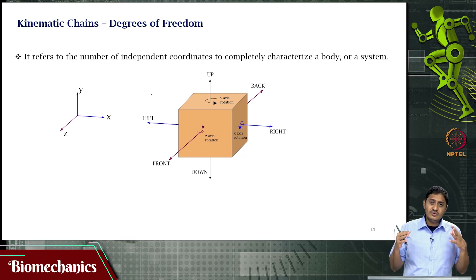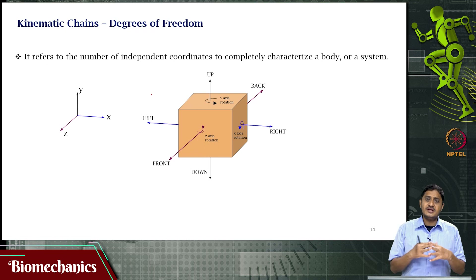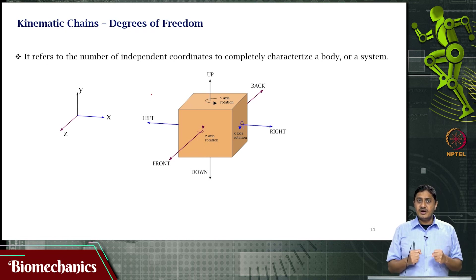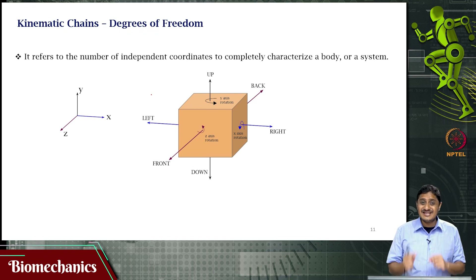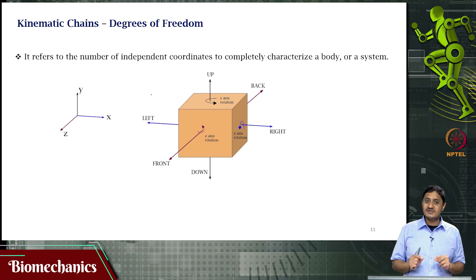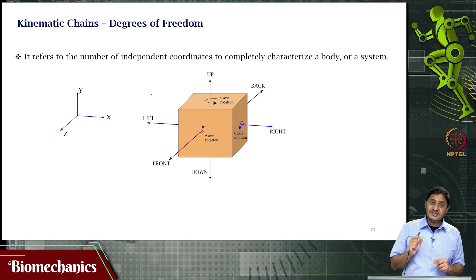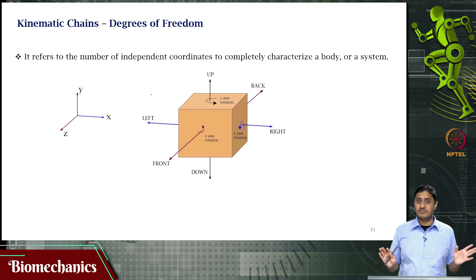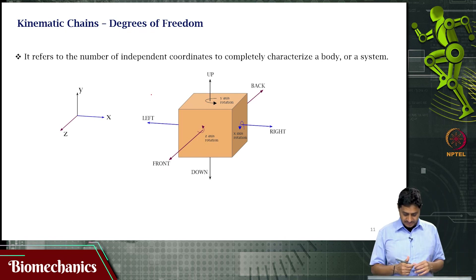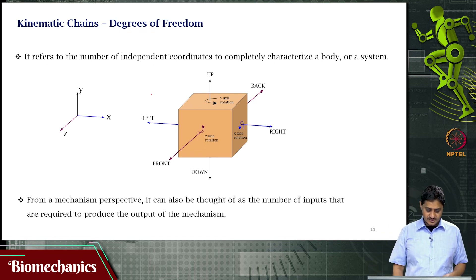But if you have joints or rigid bodies that are connected to each other, there are constraints about which movements can happen. That means the number of degrees of freedom will reduce — specific degrees of freedom will be curtailed. Some degrees of freedom will be present; others will not be present.